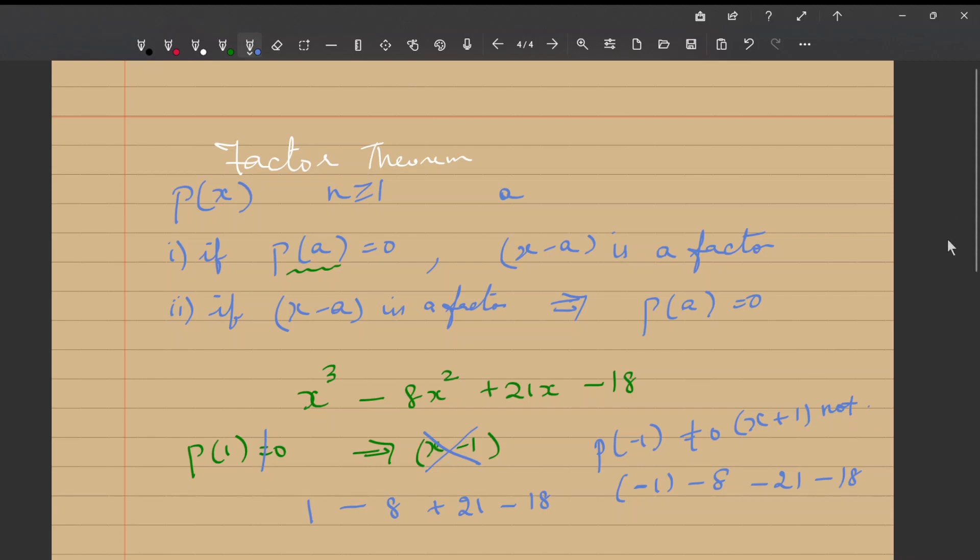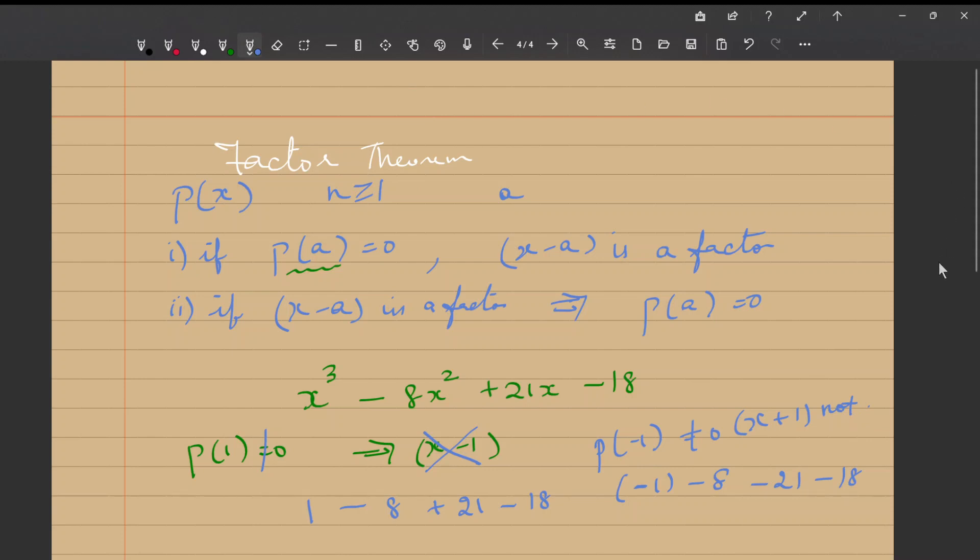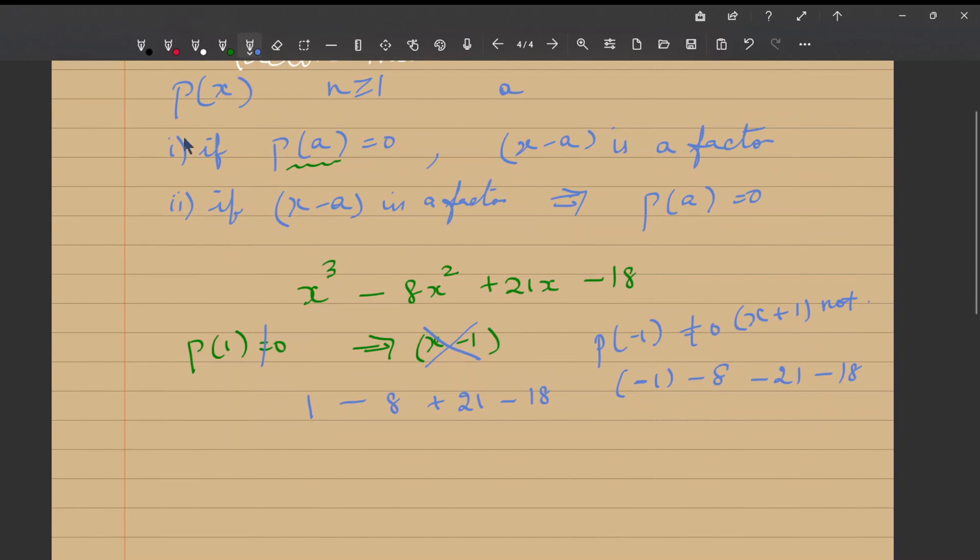Now, let me try P(2) and see if x minus 2 is a factor. So, trying P(2). I substitute 2 in x in this equation. 2³ - 8 × 2², which is 8 × 4, + 21 × 2 - 18, which is equal to 2³ is 8 - 8 × 4 is 32 + 21 × 2 is 42 - 18.